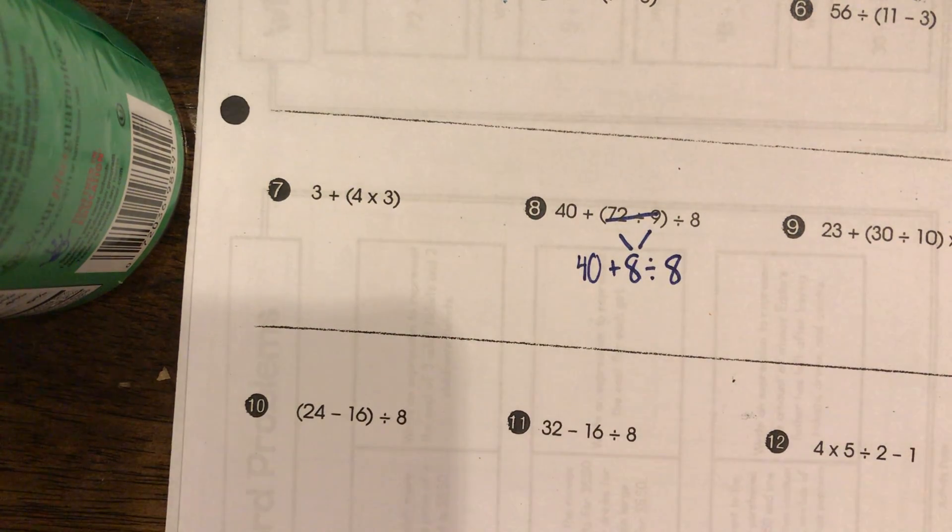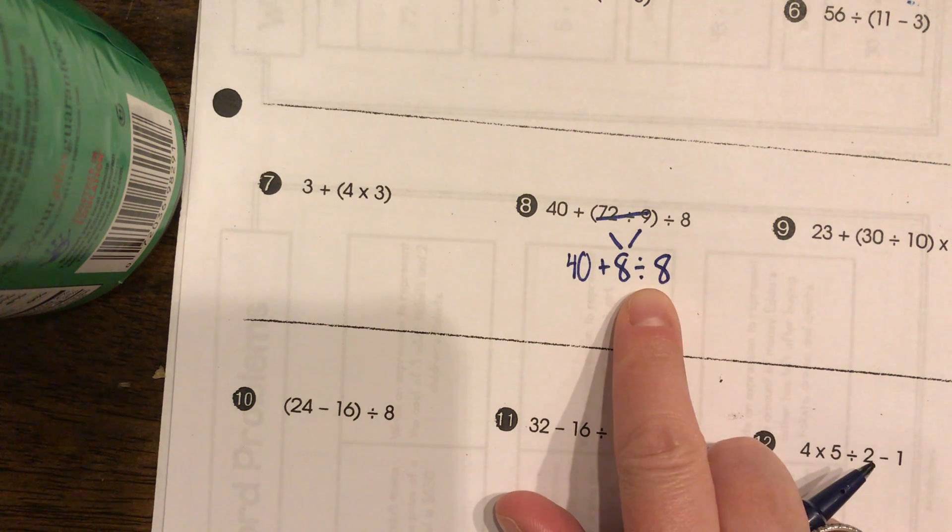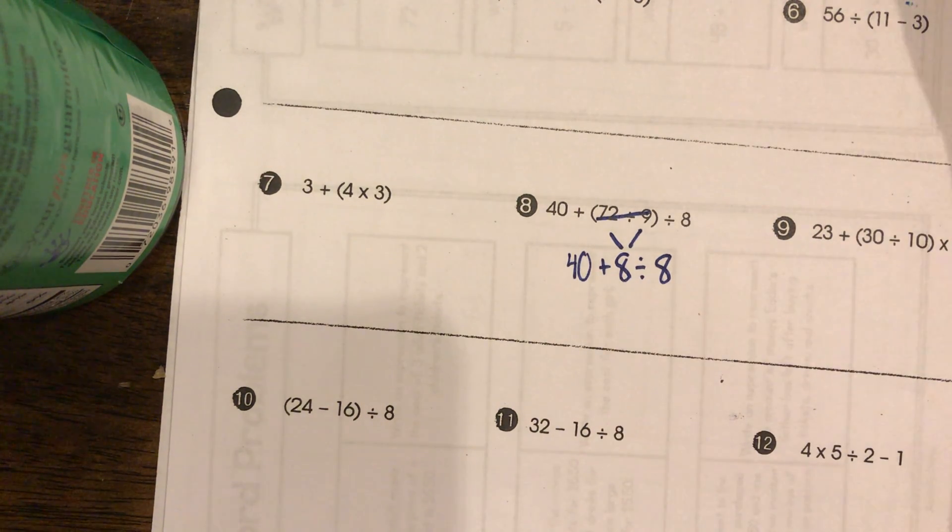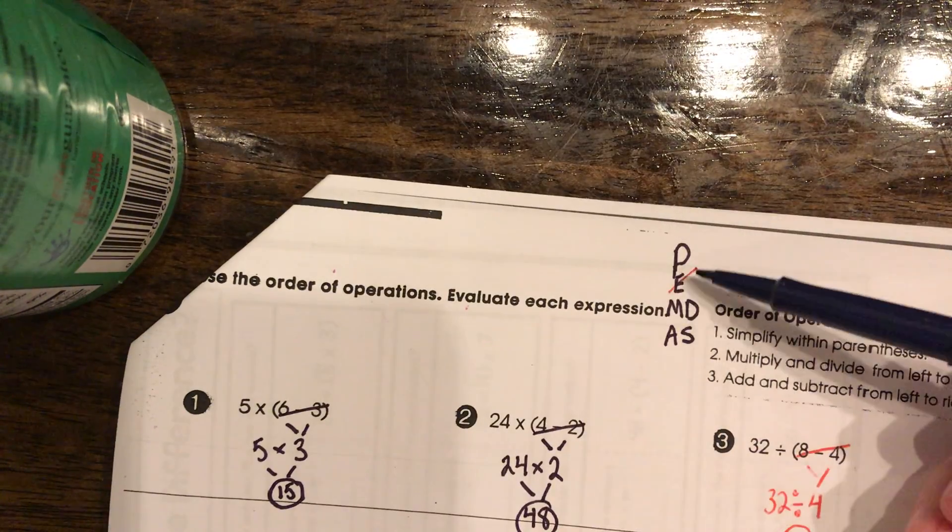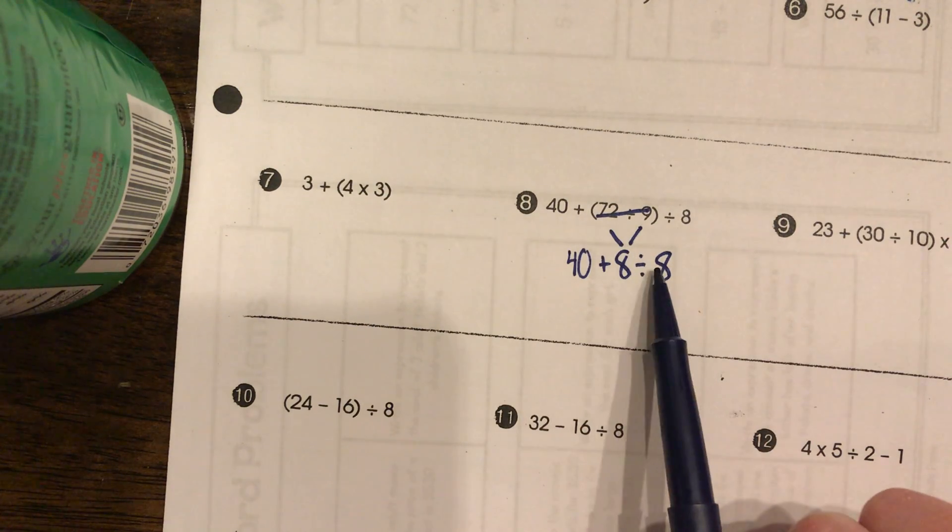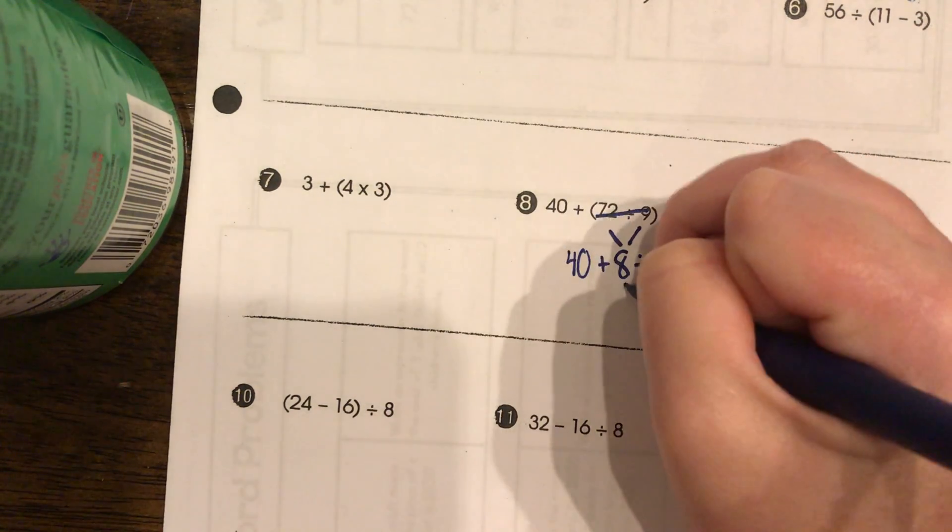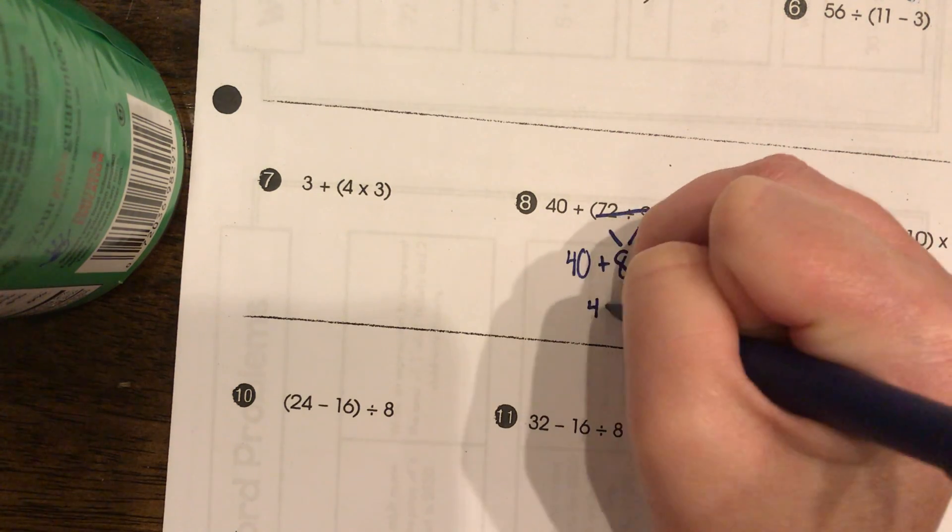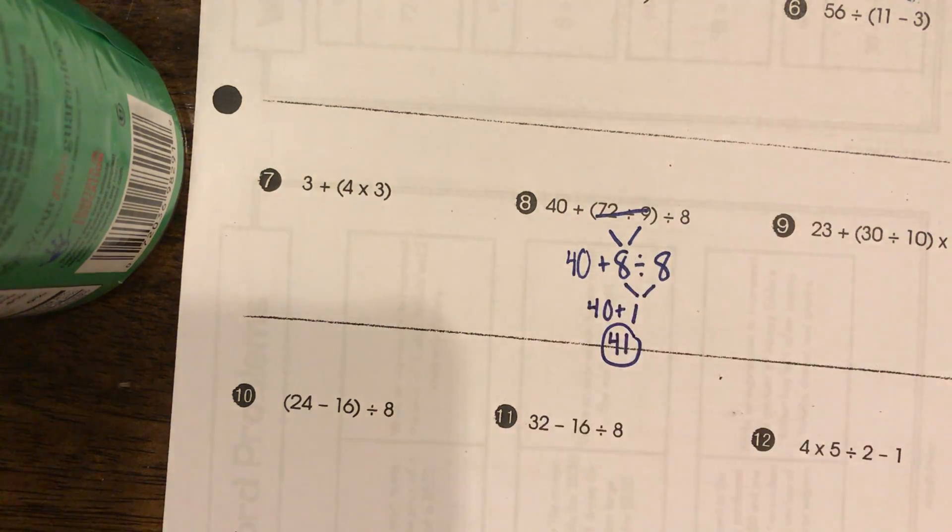What we have here now, we have a choice. We have two different operations. We have addition and we have division. We're going to look at the order of operations. We've got parentheses, multiplication and division, and then addition and subtraction. If we're looking at this, we have to do the division before the addition. Eight divided by eight is one, and then 40 plus one is 41, and there is our garlic sauce.